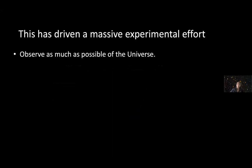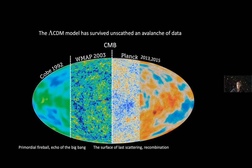This has driven a massive experimental effort to observe as much as possible of the universe. Despite this effort, the Lambda CDM model has survived unscathed an avalanche of data. This is the picture of the cosmic microwave background through the ages as seen by different instruments. Here is the COBE map from 1992, actually published in 1994. At that time, the cosmic microwave background was called the primordial fireball, the echo of the Big Bang.